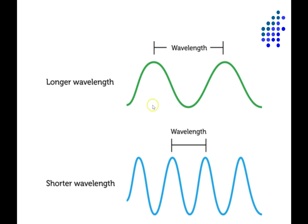And of course, different waves have different wavelengths. For sound waves, the wavelength is inversely related to the frequency. So the higher the frequency, the more often these peaks occur, the shorter the wavelength, and the higher the pitch of the sound.